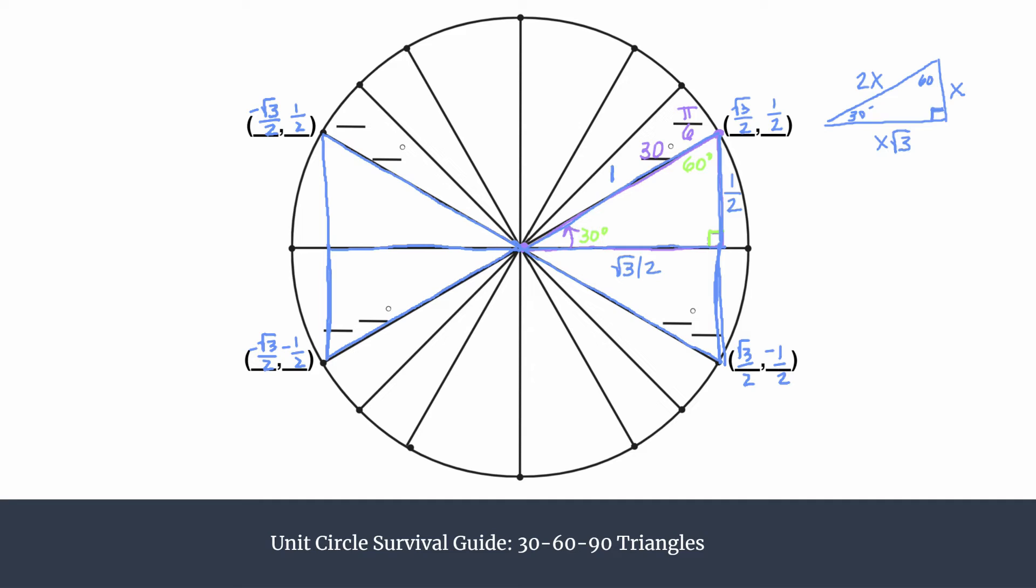And of course, if you want to fill all these in, you'll see that these have the same reference angles as our 30-degree angle from the first quadrant. We have 150 degrees or 5π over 6 in the second quadrant. We have 210 degrees or 7π over 6. That's the angle in the third quadrant. And then we have 330 or 11π over 6 in the fourth quadrant.